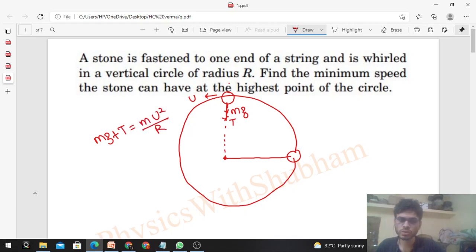From here, find out the value of u. So u is equal to square root of r by m times mg plus tension. Now, if I have to minimize u, R is constant, m is constant, mg is also constant. So the only variable is tension. If you want to minimize u, then you have to minimize the tension.